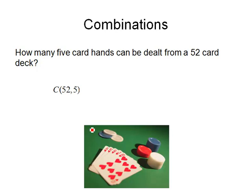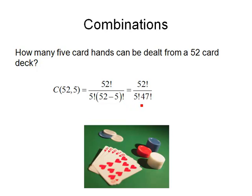From the 52 cards I need to pick 5, and because order doesn't make a difference, I want to do a combination. So C(52,5) = 52 factorial divided by 5 factorial times 47 factorial. When I work that all out, I end up getting 2,598,960 hands — an awful lot of 5-card poker hands that can be dealt from a deck.